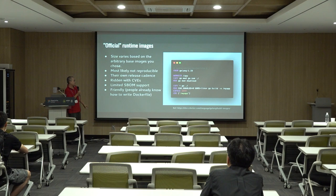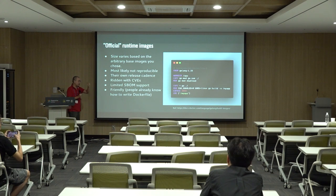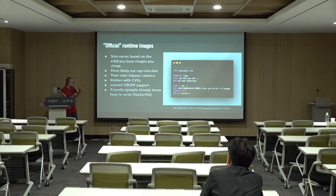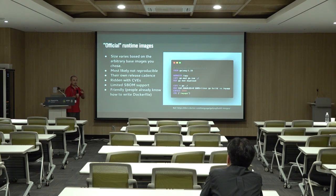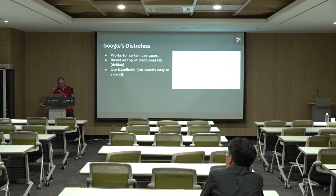They have very limited SBOM — software bill of materials. The SBOM tells you this image includes this library, this version, so that you know what's inside the image. The pros of the official image is that it's very developer-friendly — everyone knows about this official image and it's very easy to extend, very different from Distroless where you have to know Bazel to extend it. So it has a lot of cons and one pro.